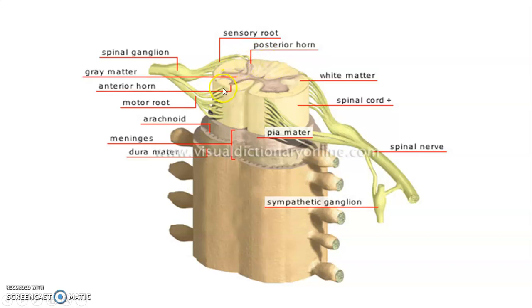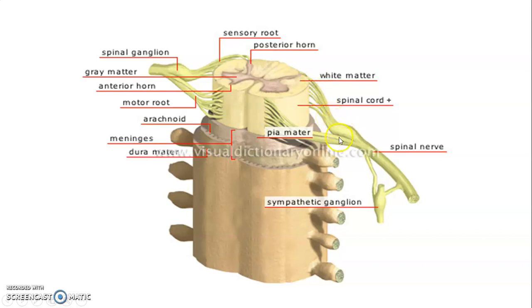From the ventral horn we have ventral rootlets that join to form a ventral root — these are motor. From the dorsal horn we have dorsal rootlets that join to form dorsal roots, which are sensory. The dorsal roots have their cell bodies within the dorsal root ganglia. Sensory dorsal roots combine with motor ventral roots to form a spinal nerve.